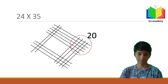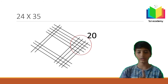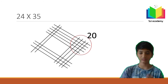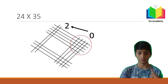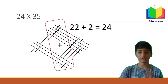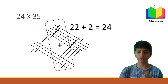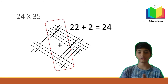Each circle holds only one digit. Starting from the last circle: 20 has two digits, so we write 0 and carry 2 to the middle circle. The middle circle now has 22 + 2 = 24. Again two digits — write 4 and carry 2 to the first circle.